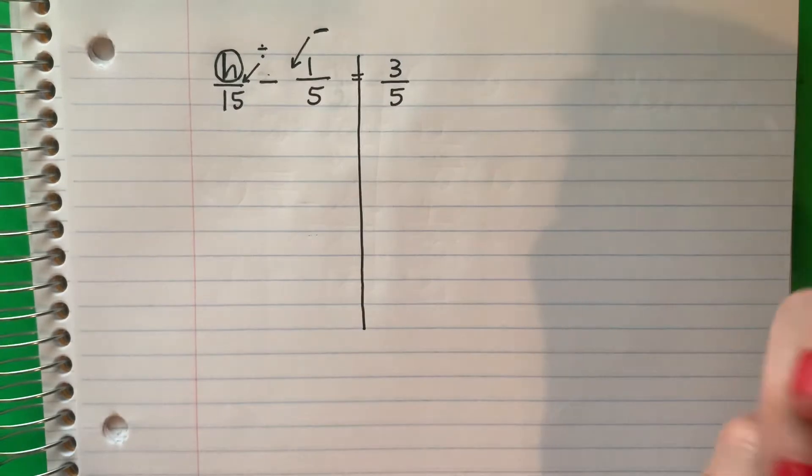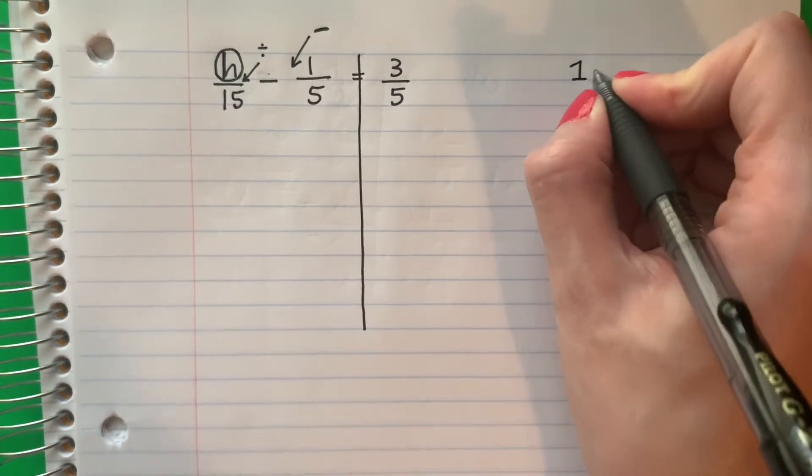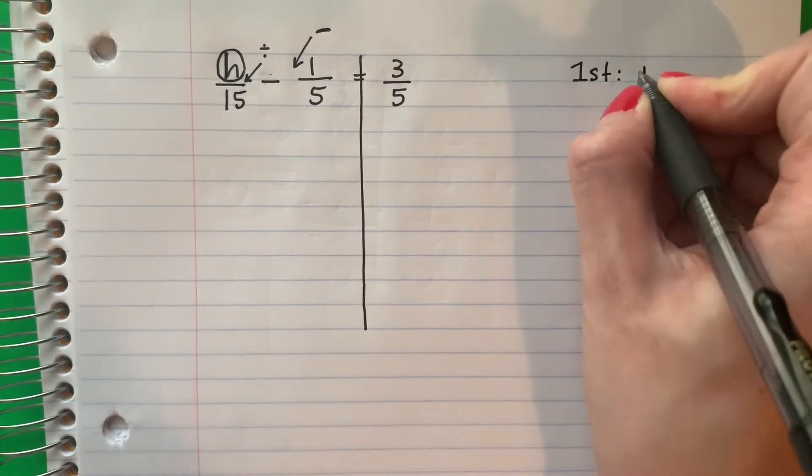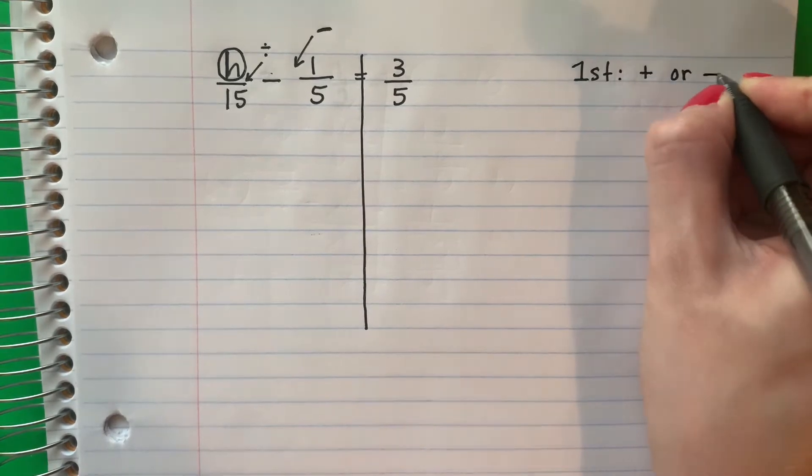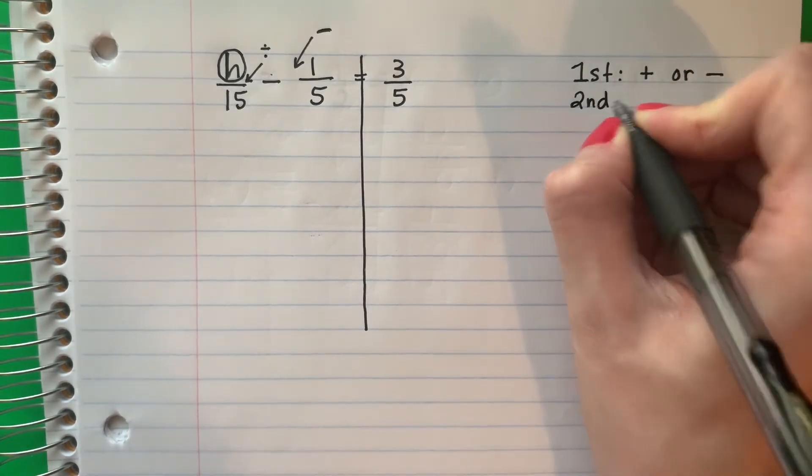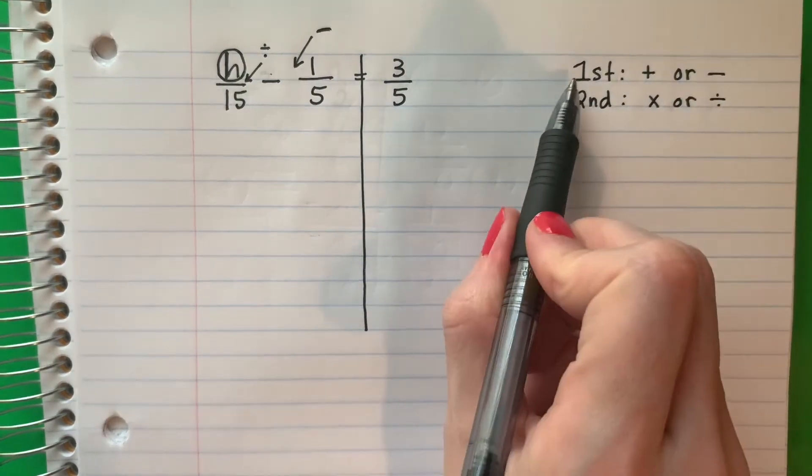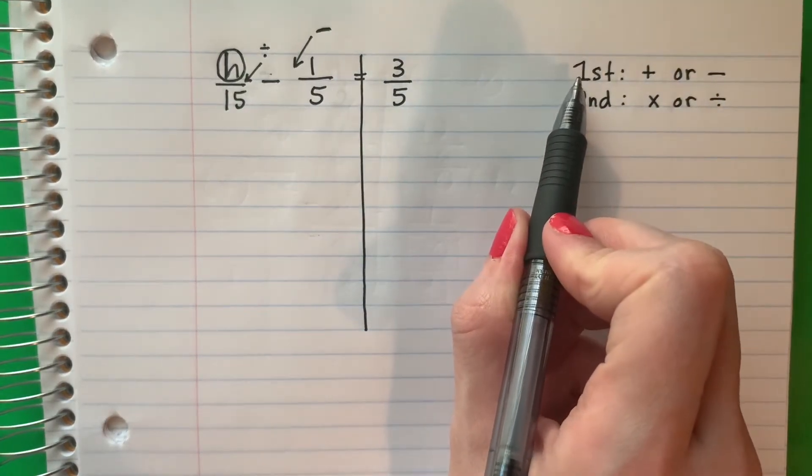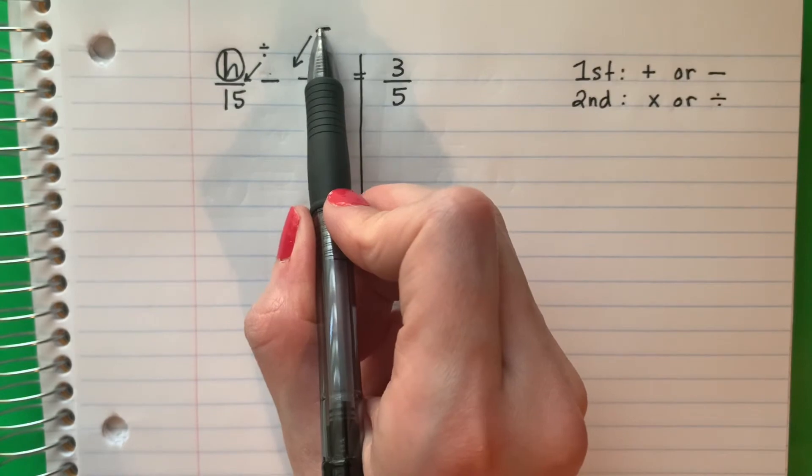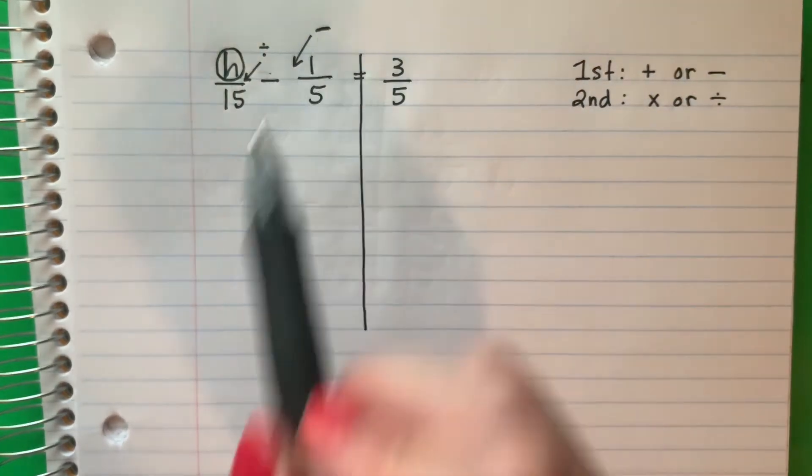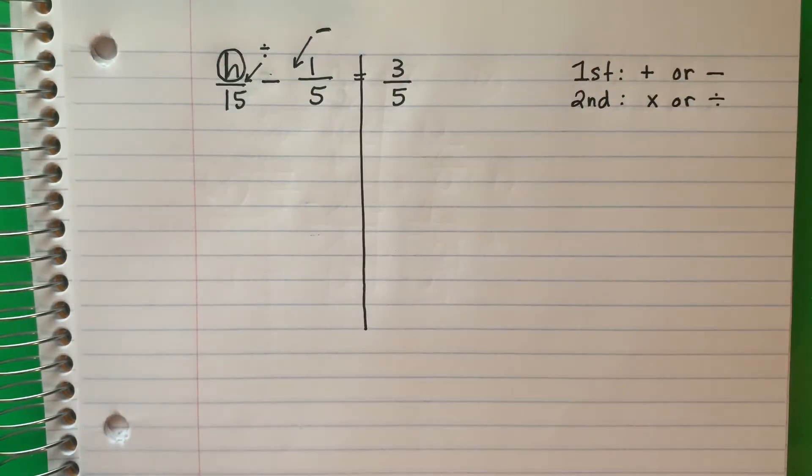So I have a divide and a minus. Remember, recuerda, first you need to do plus or minus. And second is multiply or divide. So what do I do first? ¿Qué necesito hacer primero? Well, in this case, in este caso, I have a minus. Tengo un menos. So I'm going to do the minus first. Voy a hacer el menos primero.